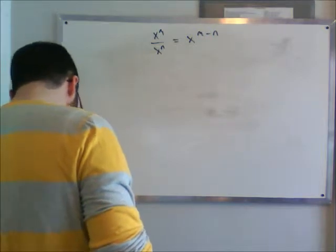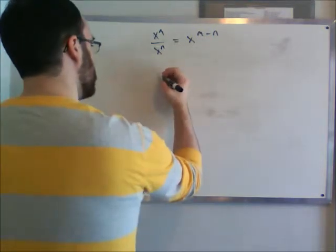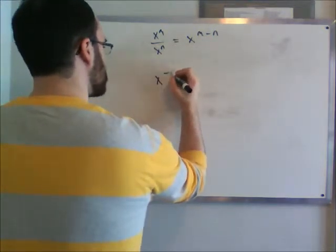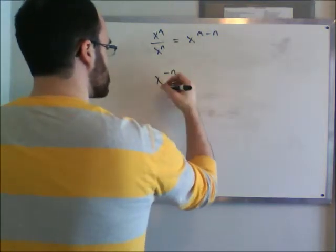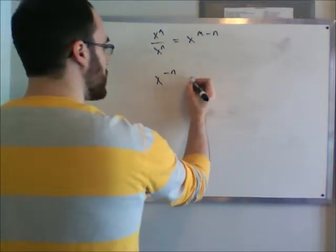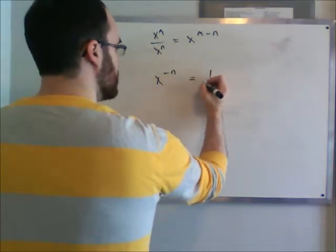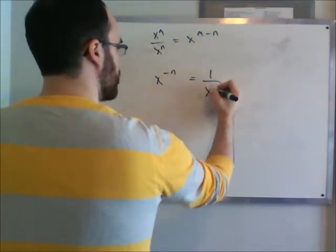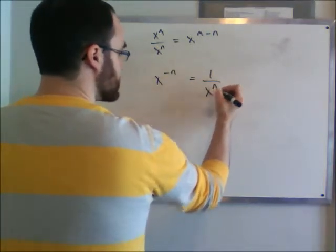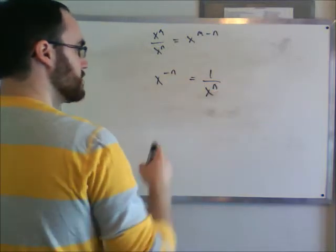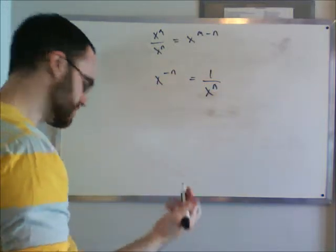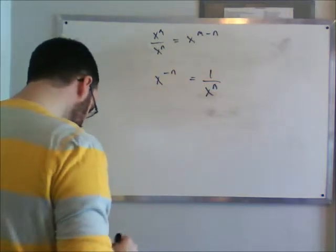After that, we have x to the minus n. If we have x to any negative exponent, it's the same thing as flipping the exponent to the bottom of the fraction — that is, 1 over x to the n. Whenever there's a negative exponent, you always flip it to the bottom.